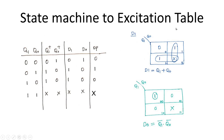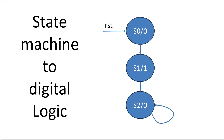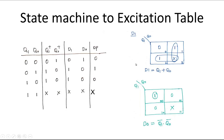To write the excitation table, we first need to know how many flip-flops will be in our logic design. Count the number of states: S0, S1, S2 — that is three states total. We need to assign binary bits to each state. Using binary encoding, two bits are sufficient for three states: we assign 00 to S0, 01 to S1, and 10 to S2. One-hot encoding would require three flip-flops, but in this design we use binary encoding so only two flip-flops are needed.